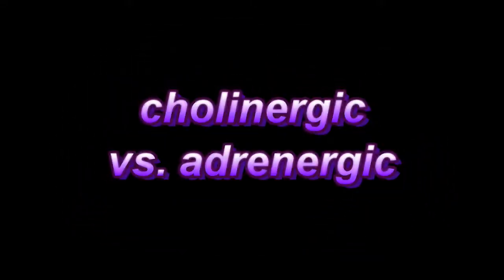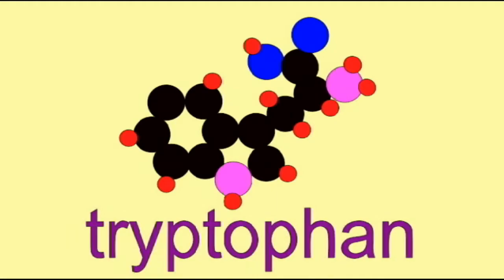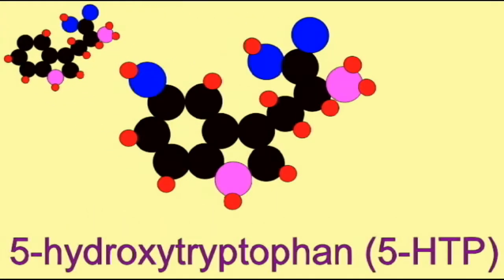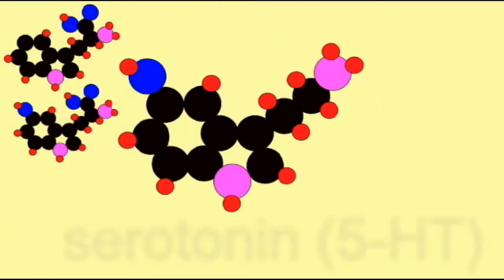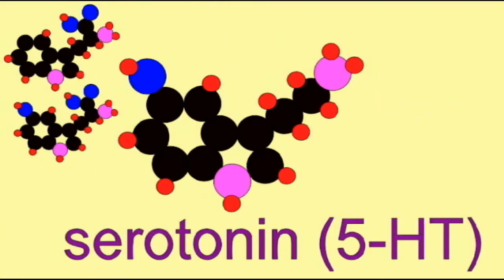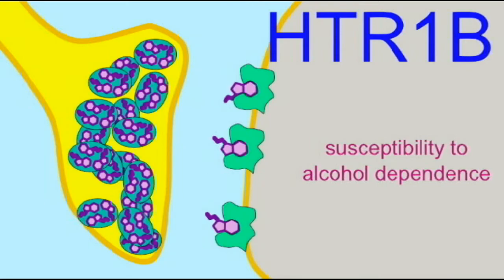The signaling in the nervous system requires a large number of different signals and receptors which are capable of perceiving those signals. In this video, the amino acid tryptophan is converted into serotonin, which is a neurotransmitter.